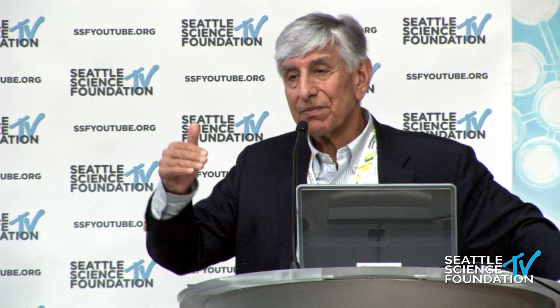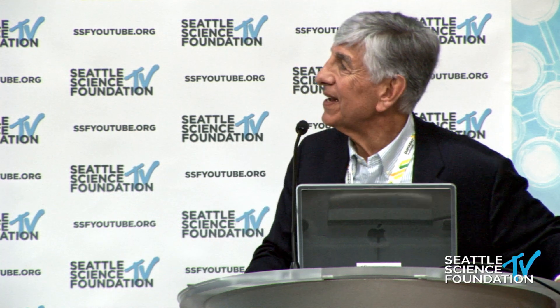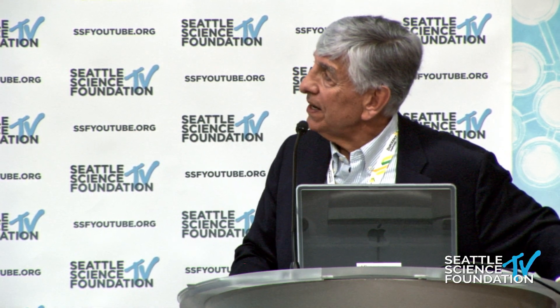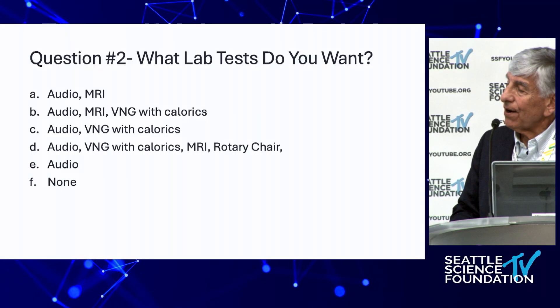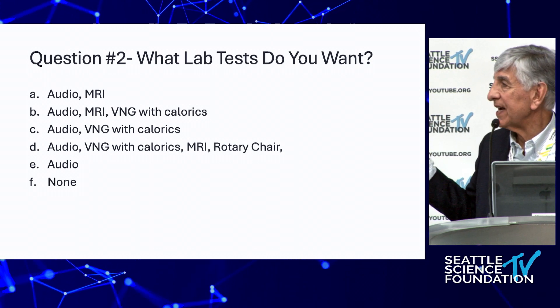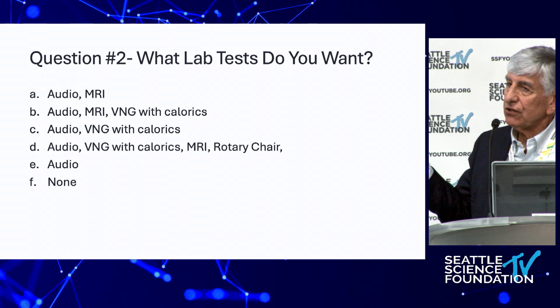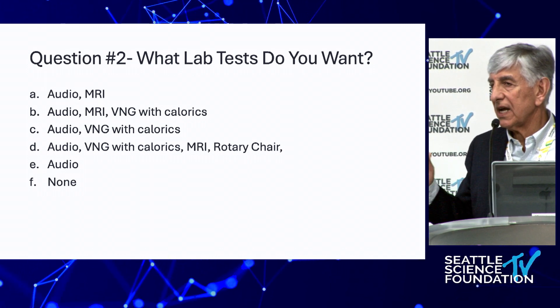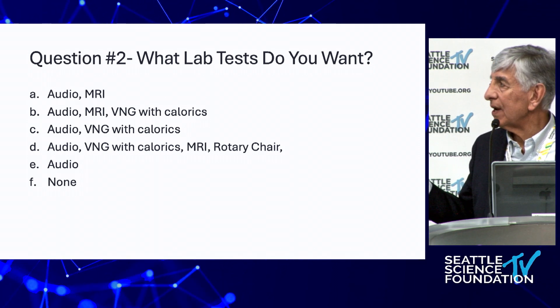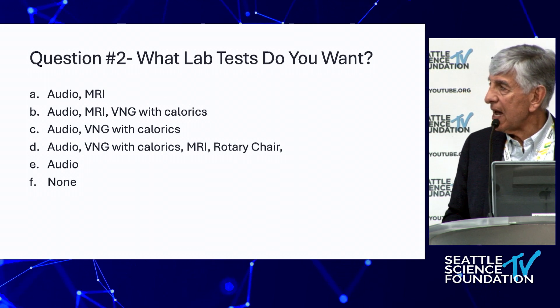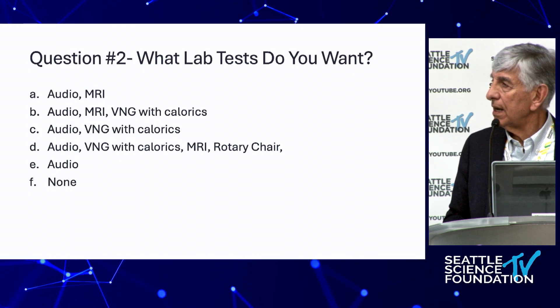At an ENT office, I get an audiogram on almost everyone — some patients say they don't have hearing loss but have a slight asymmetry, and you can't be sure you're not dealing with Meniere's. An audiogram is the minimum. For vestibular testing, we do a vestibular VNG — positional testing and calorics. The panel generally agreed that audiogram plus VNG would be reasonable, with option C being appropriate for this case.